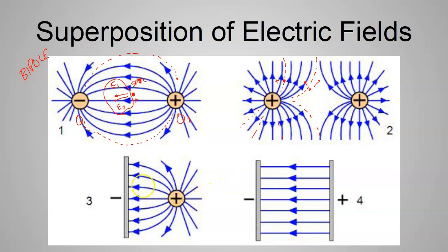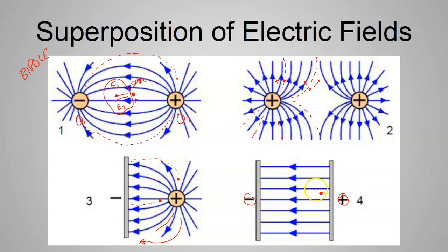Here's a positive charge next to a bar of iron with negative charge distributed over it. A positive test charge is repelled from the positive charge and attracted to the negative bar, so field lines curve away and then into the bar. With two parallel bars — one positive, one negative — a test charge is repelled from the positive bar and attracted to the negative bar, producing nice, straight parallel electric field lines between them.